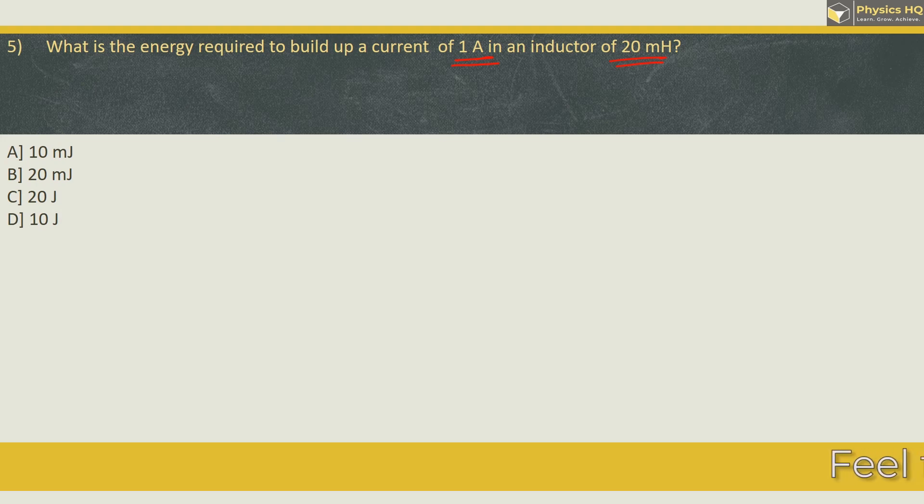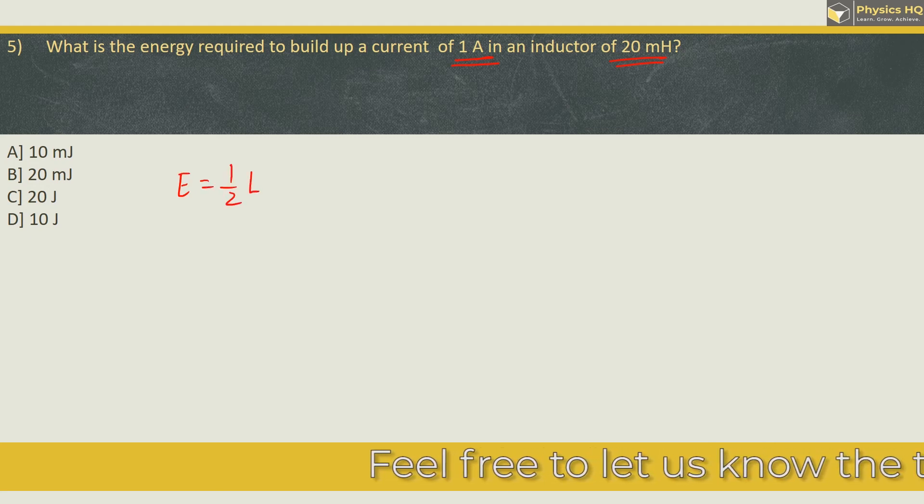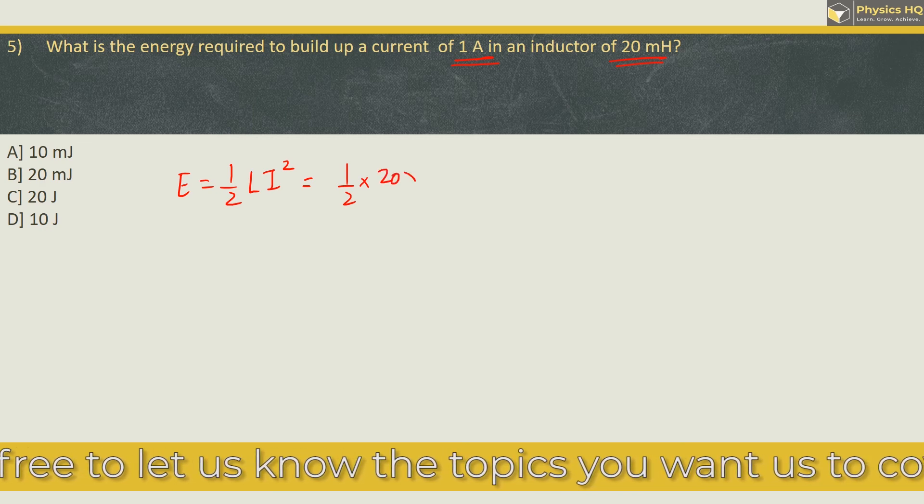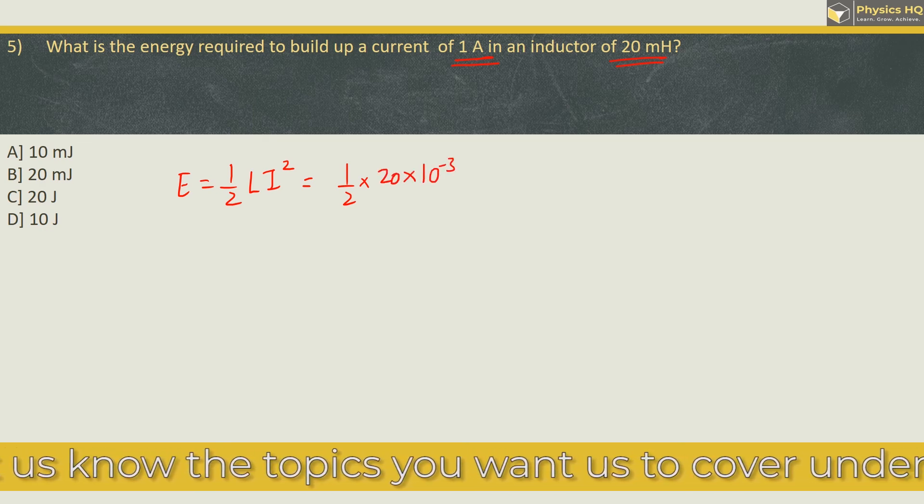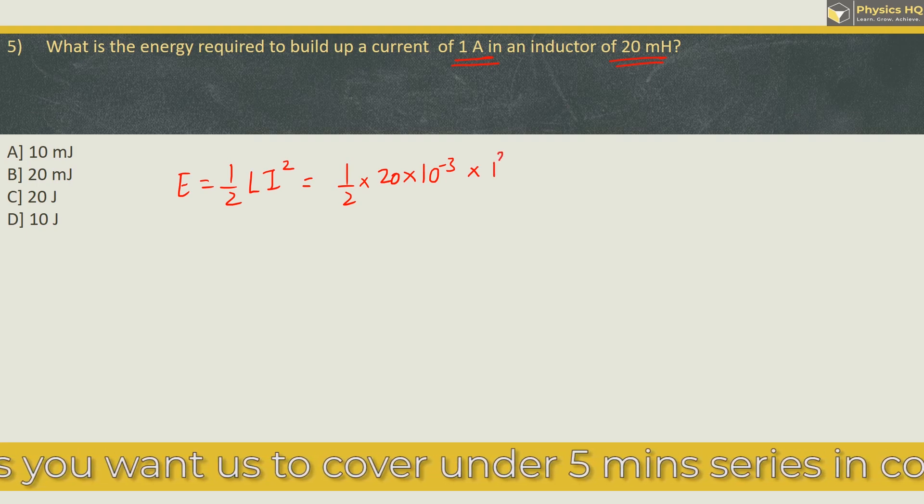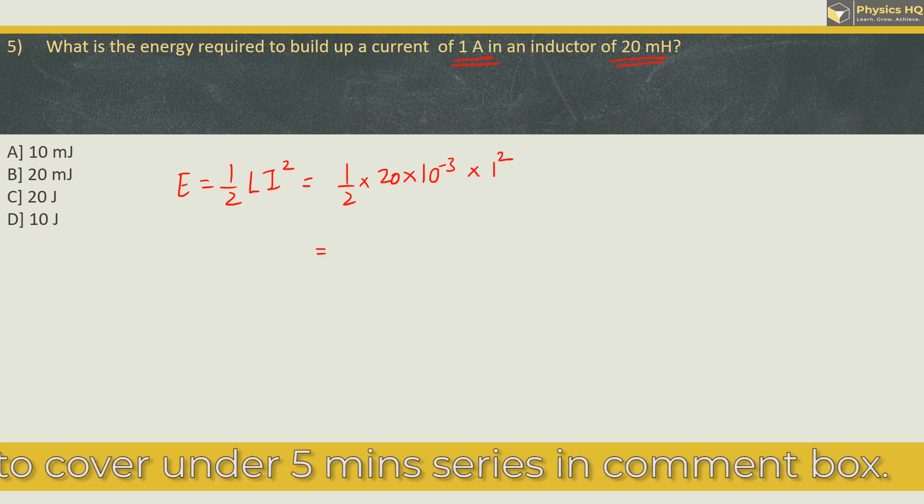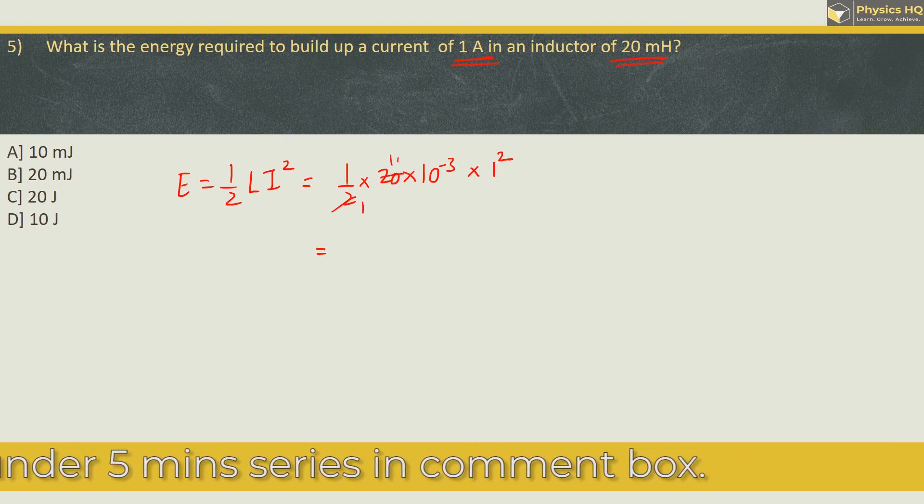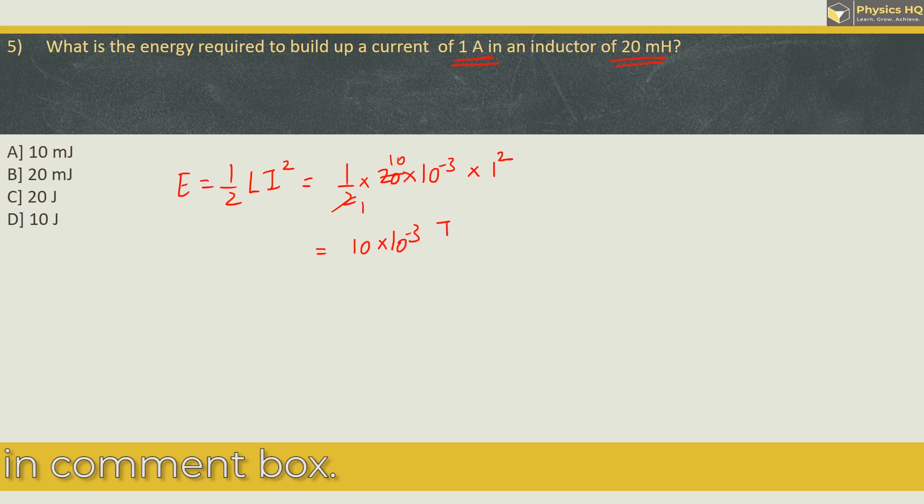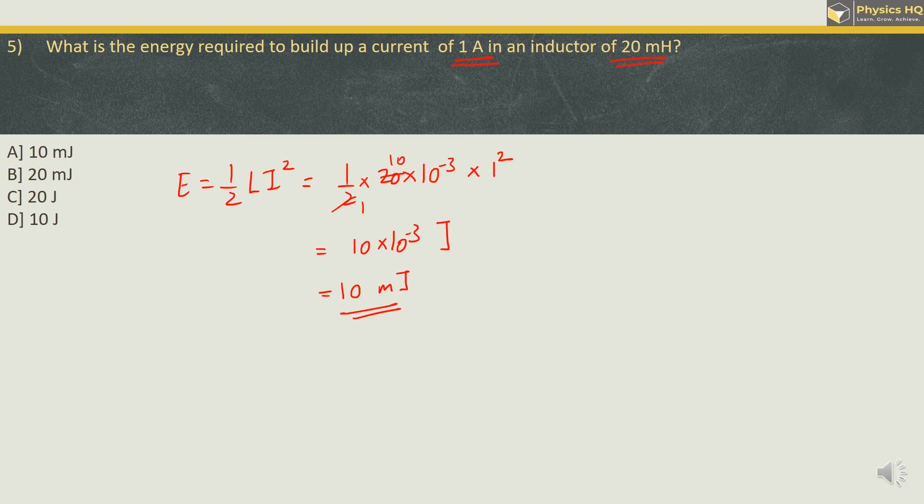So the formula for energy build up in an inductor is given by (1/2)LI². Let us put the values: half into L is given as 20 mH, milli is 10^-3 and current is 1 ampere squared will be 1 only. So 2×1s are 2, 10s are 20. So we got 10 into 10^-3 J. Again this 10^-3 can be written as milli J. So the correct option is option A.